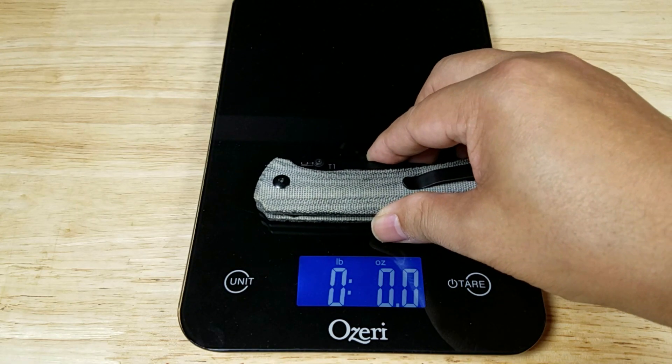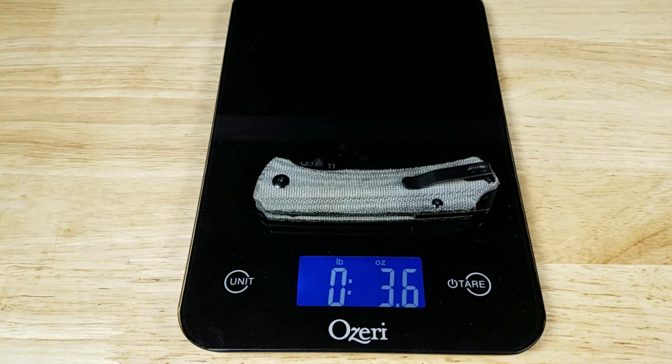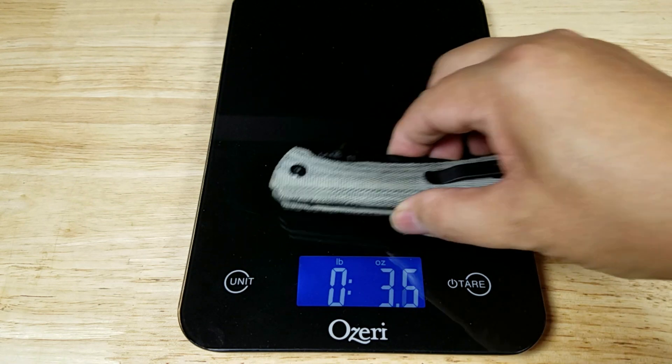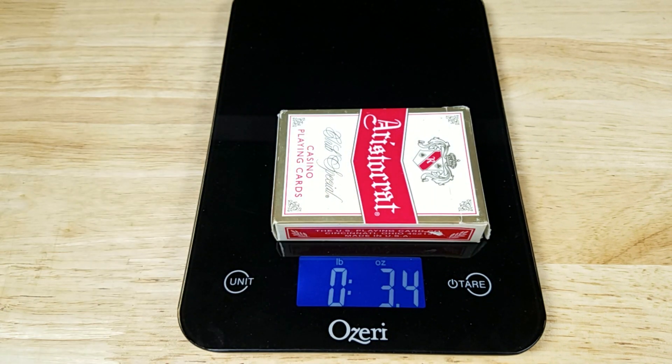Alright, here comes your weight reference. T1 coming in at just about 3.6 ounces. And that's almost as much as a full deck of cards.